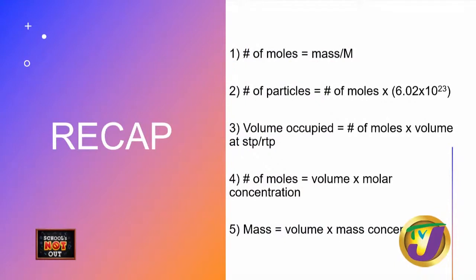Don't use the volume occupied formula for liquids or solids. Volume occupied equals number of moles times the volume at either STP or RTP — the question will always specify which one. Number four: number of moles equals volume times molar concentration. The volume must be in dm³ to match the concentration units of moles per dm³. Number five: mass equals volume times mass concentration.